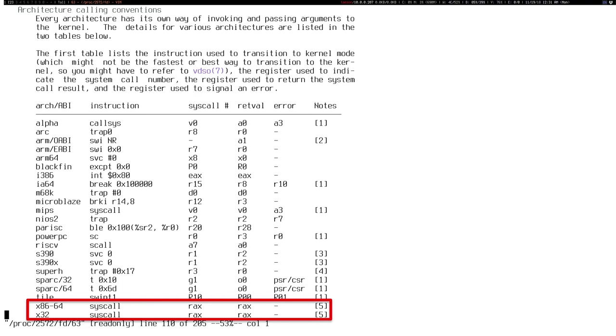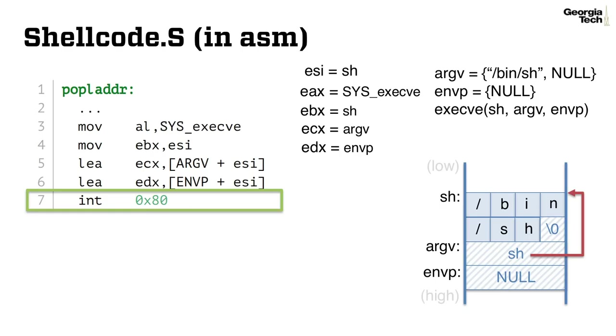For example, in x86 and x86 64-bit architecture, the system call number is passed through the EAX or RAX registers. Finally, we can invoke the system call by executing int 80, which runs the bin shell.